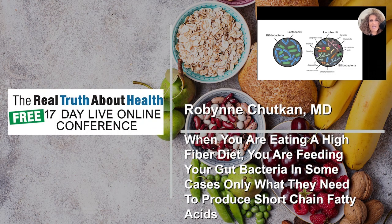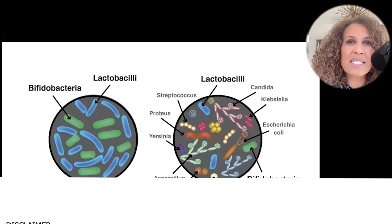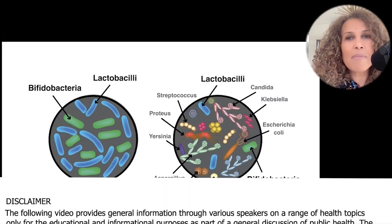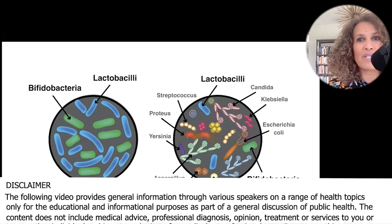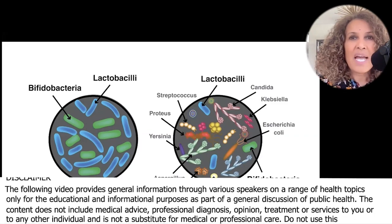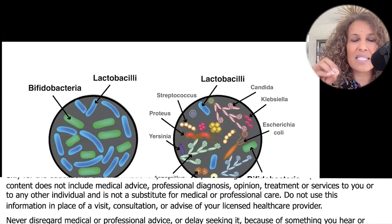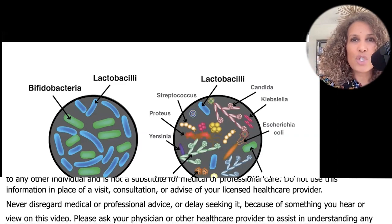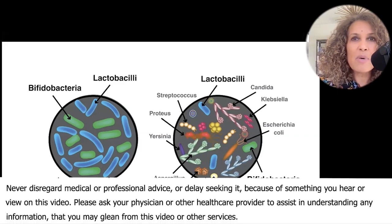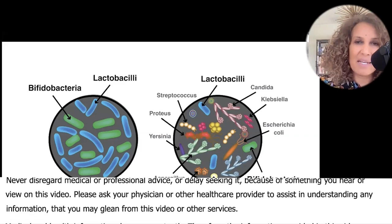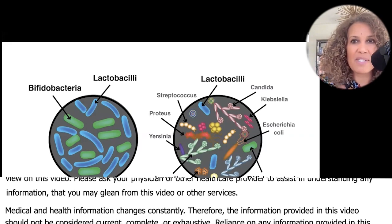What we are really talking about here is dysbiosis, and this is a general term. People talk about small intestinal bacterial overgrowth, SIBO. SIBO is a form of dysbiosis. When you understand this, SIBO is not just too much bacteria — SIBO is imbalanced, as a form of dysbiosis.